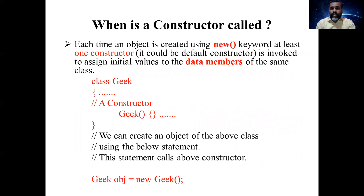Each time you create an object using the new keyword, at least one constructor is invoked to assign an initial value to the data members of that class. If the user has defined a constructor, it will be called; otherwise the Java compiler calls the default constructor. For example, here is a class called 'Geek' with a constructor also called 'Geek' — when you create an object for this class, the constructor function is automatically called.